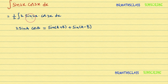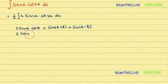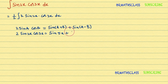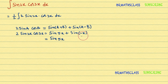Here we need 2 sin 2x times cos 3x, so in place of A we write 2x and in place of B we write 3x. Therefore, 2 sin 2x times cos 3x equals sin(2x + 3x) plus sin(2x − 3x), which gives sin 5x plus sin(−x). Since 2x minus 3x equals minus x, we get sin 5x plus sin(−x).